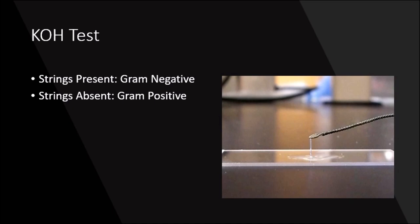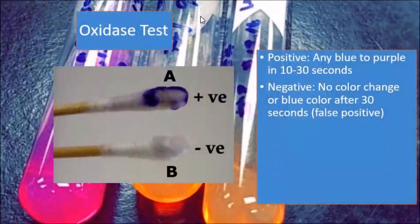Then you're going to add one drop of the 3% KOH, and then using a loop, drag the KOH and bacteria together and mix for five to ten seconds. You're going to come in from this end, come from this end, meet in the middle, and then slowly lift the loop to visualize the presence or absence of DNA strings. Strings present means gram negative, strings absent means gram positive.